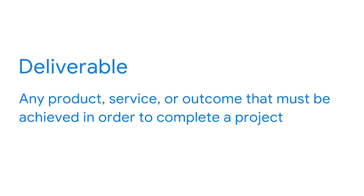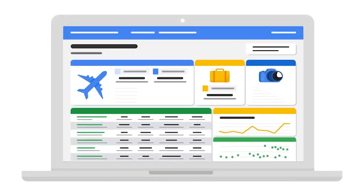After asking the right questions in order to thoroughly understand the project, it's time to define project deliverables. A deliverable is any product, service, or outcome that must be achieved in order to complete a project. This could be a new BI dashboard, a report, a completed analysis, or documentation of a process or decision. Pretty much anything requested by stakeholders can be a deliverable. In BI, the most common deliverables are the dashboards and reports that provide insights to users.